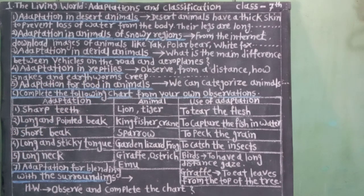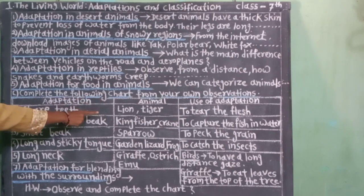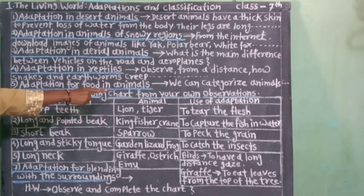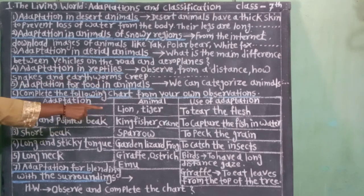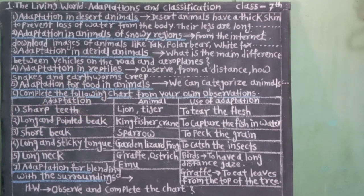Number 1. Adaptation: sharp teeth. Animal: lion, tiger. Use of adaptation: to tear the flesh.